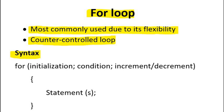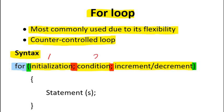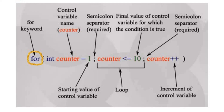Let's see the syntax of the for loop. It starts with the keyword 'for', then inside parentheses three types of information are provided: part one is initialization of a variable, the second part is condition, and the third part is increment or decrement. These three parts are separated by semicolons. The body of the loop may contain a single statement or multiple statements.